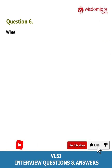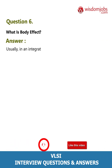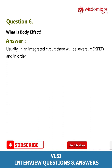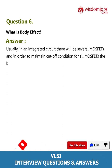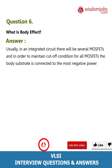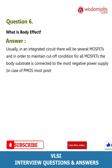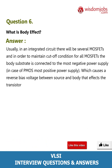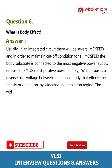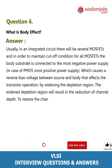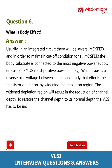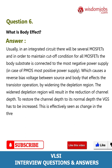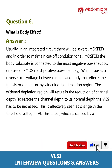Question 6: What is body effect? Answer: Usually in an integrated circuit there will be several MOSFETs, and to maintain cutoff condition for all MOSFETs, the body substrate is connected to the most negative power supply (or most positive power supply). This causes a reverse bias voltage between source and body, which widens the depletion region and reduces the channel depth. To restore the channel depth to normal, VGS has to be increased. This effective change in threshold voltage (Vt) caused by applying voltage to the body is known as body effect.